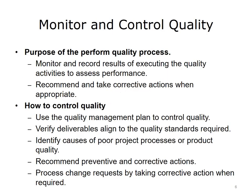Monitoring and controlling extends to the quality of the project's deliverable outcomes. By monitoring and recording the results of all quality activities, you can assess your team's performance and take corrective actions when necessary. Ensure that your team designs quality control into their processes and products so that all specifications are met and the customer doesn't experience defects and bugs. Checking these things at the end of the project cycle will probably require additional rework, money, and resources. The quality management plan details how quality control should be performed throughout the project. Verify deliverables and make sure they align to the quality standards. Identify causes of poor process or product quality. Recommend and implement preventive and corrective actions.